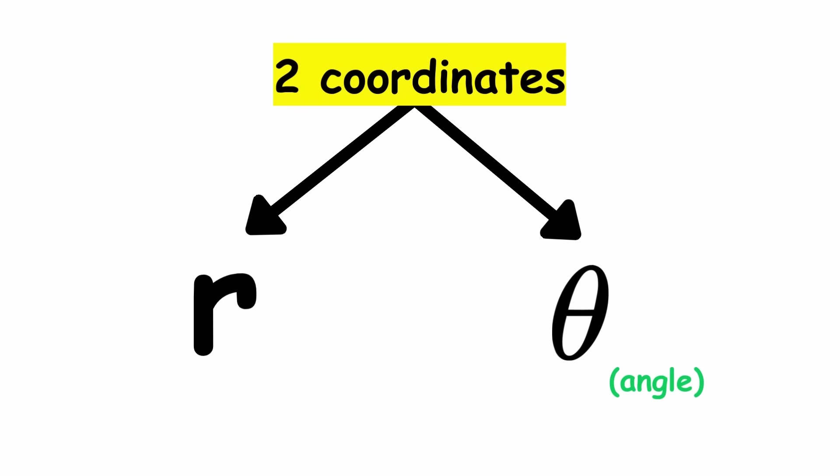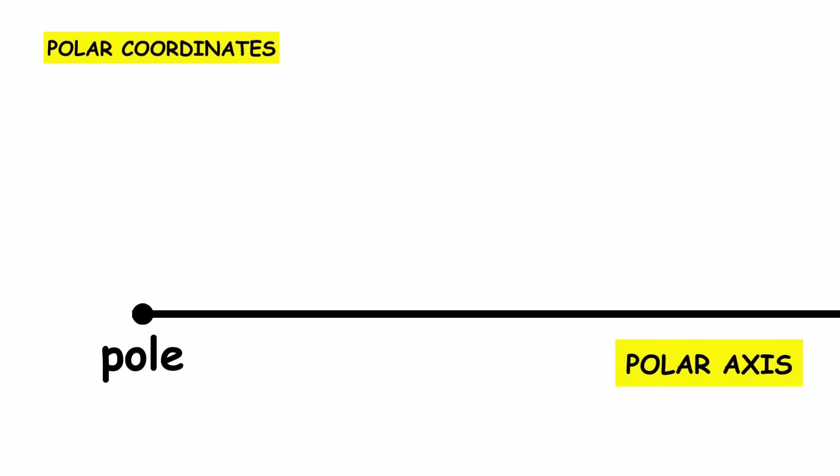Theta is an angle, and r is a distance. To reach a point, stand at the pole and face along the polar axis. Rotate an angle of theta counterclockwise. Then walk a distance of r forward. And you're done.